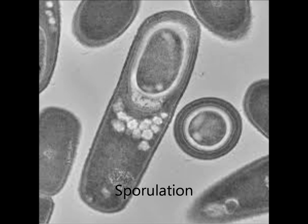Now let's get into sporulation. Sporulation occurs when a bacterium cannot find the nutrients it needs to survive, or when the population of that type of bacterium is too dense.